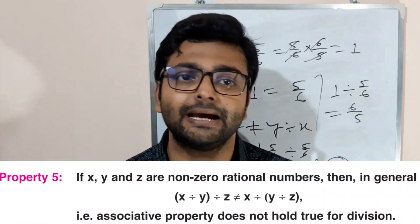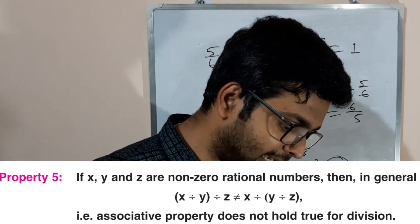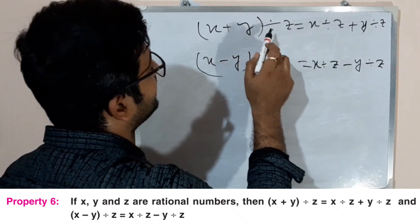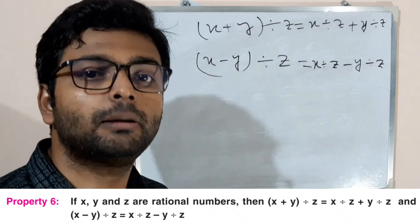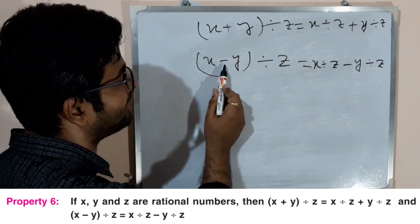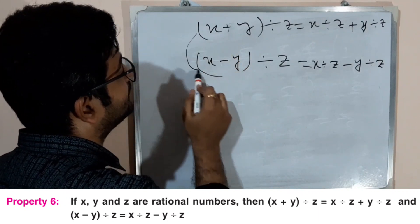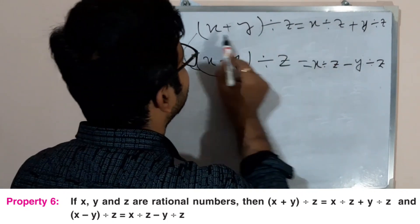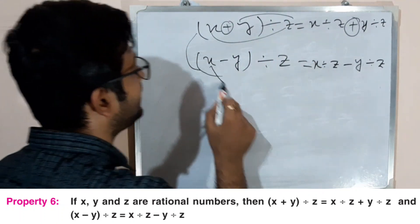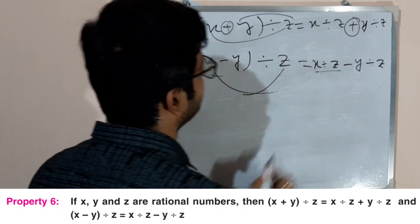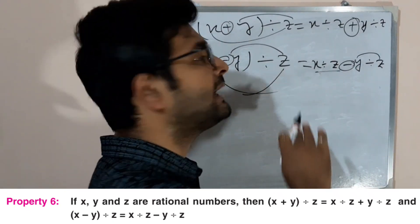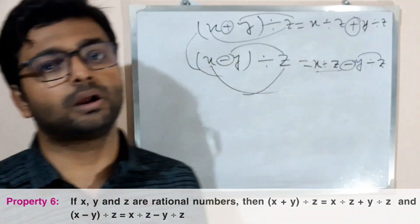This shows x divided by y is not equal to y divided by x — this is the commutative law, which does not hold. Similarly, the associative law also does not hold for division — same process as property number five. Property number six: (x + y) ÷ z equals x ÷ z plus y ÷ z, and similarly (x − y) ÷ z equals x ÷ z minus y ÷ z. This is the distributive property.